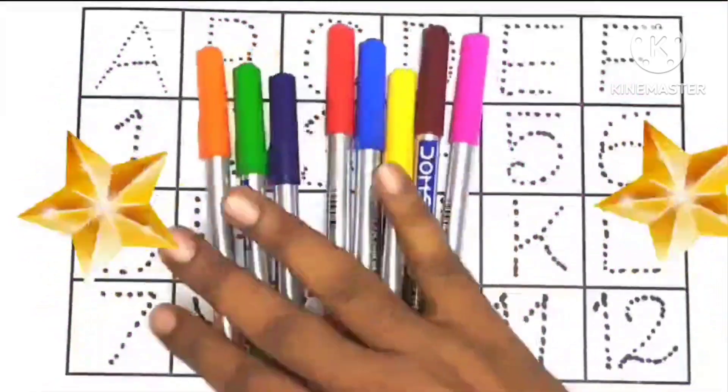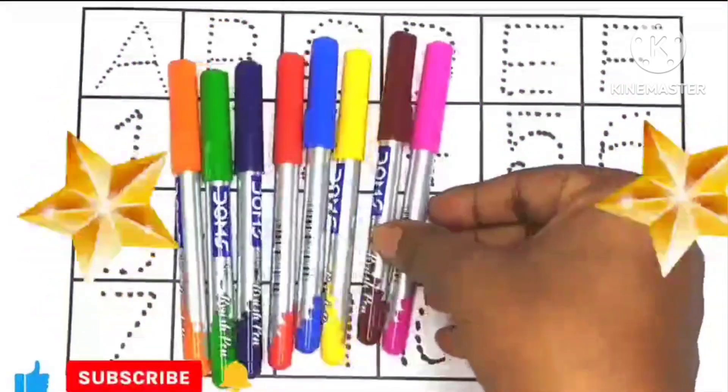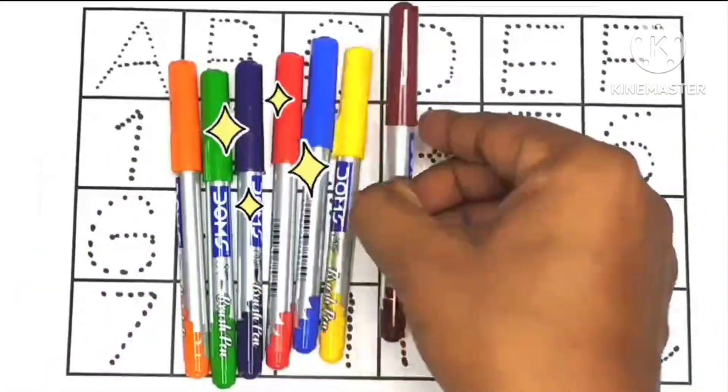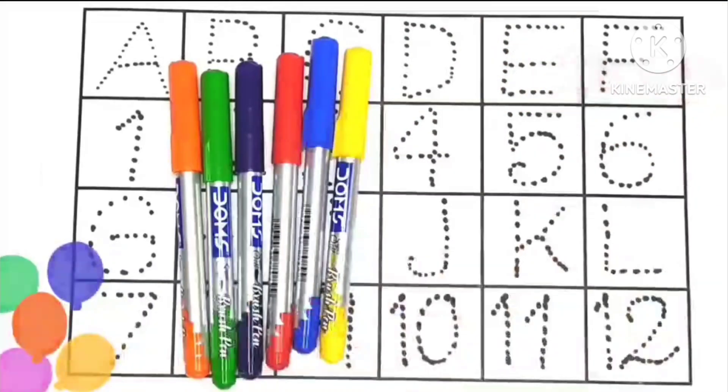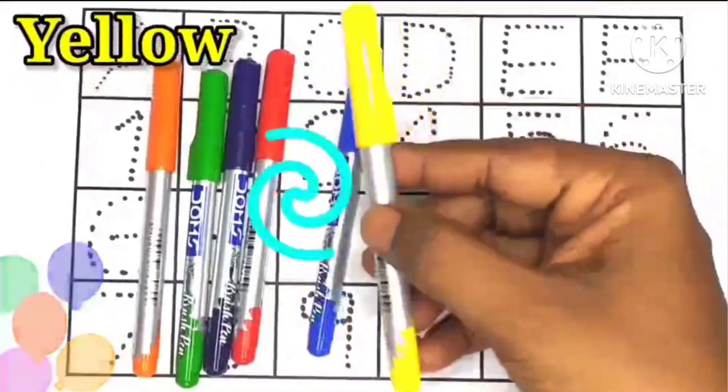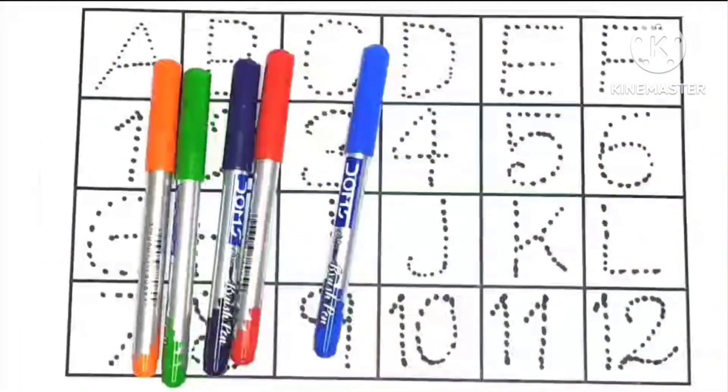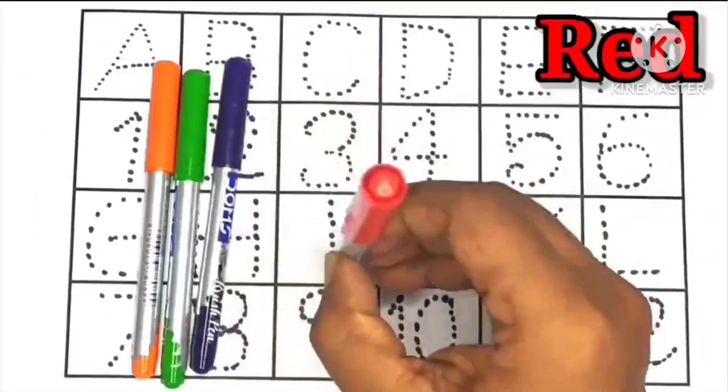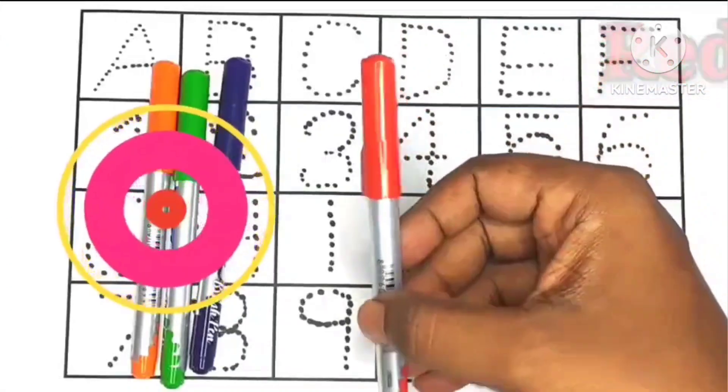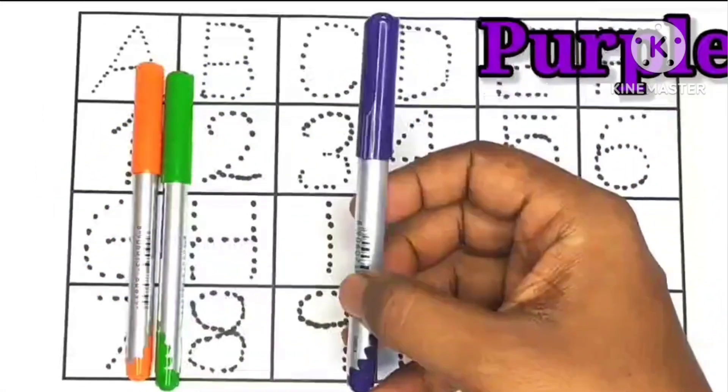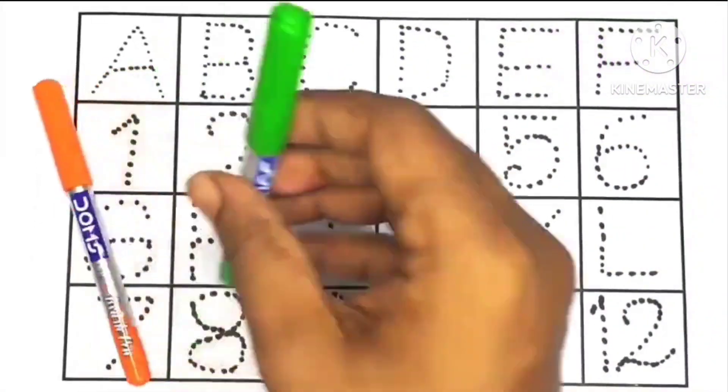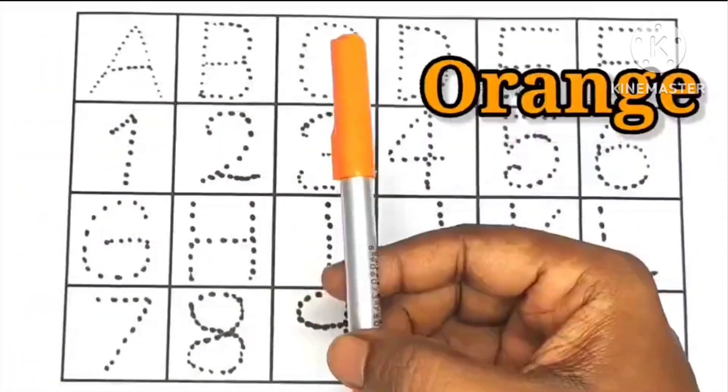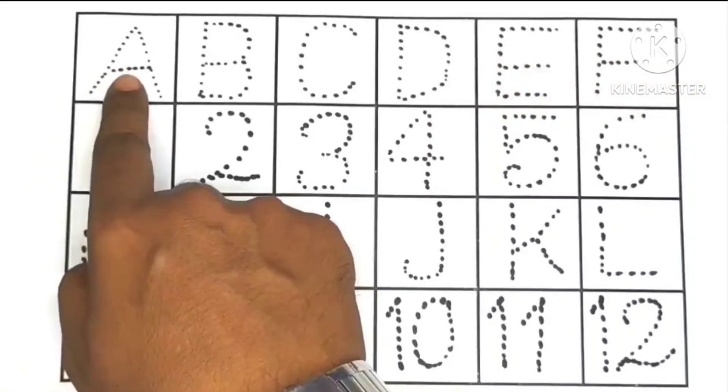This is colors: pink color, brown color, yellow color, blue color, red color, purple color, orange color. A for apple.